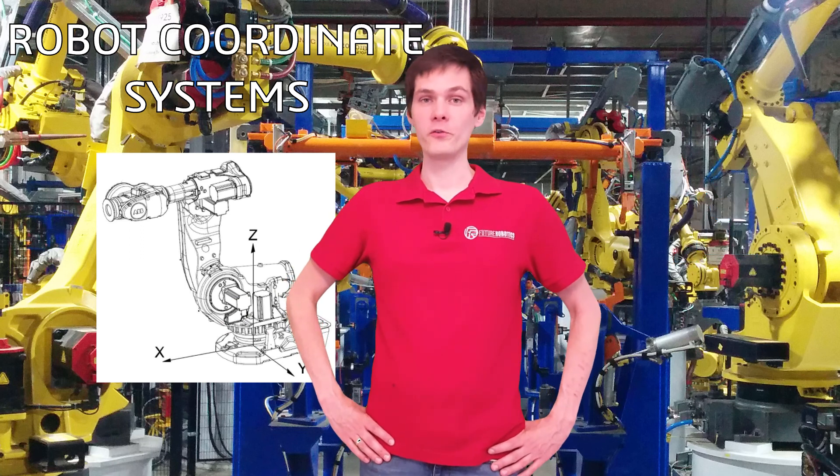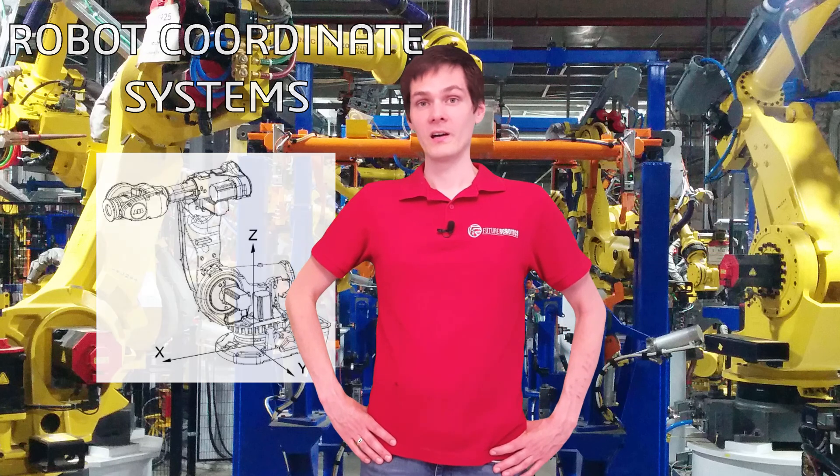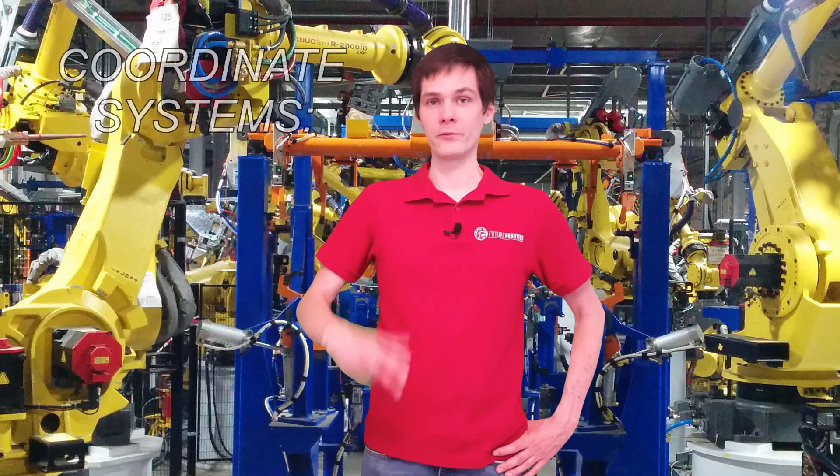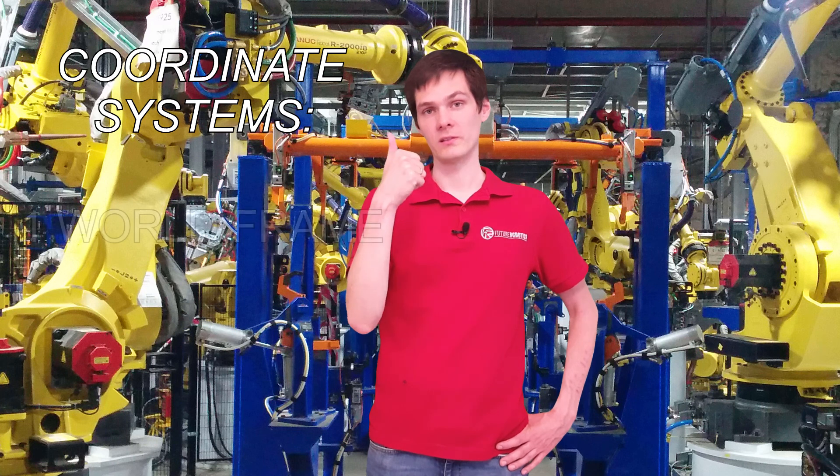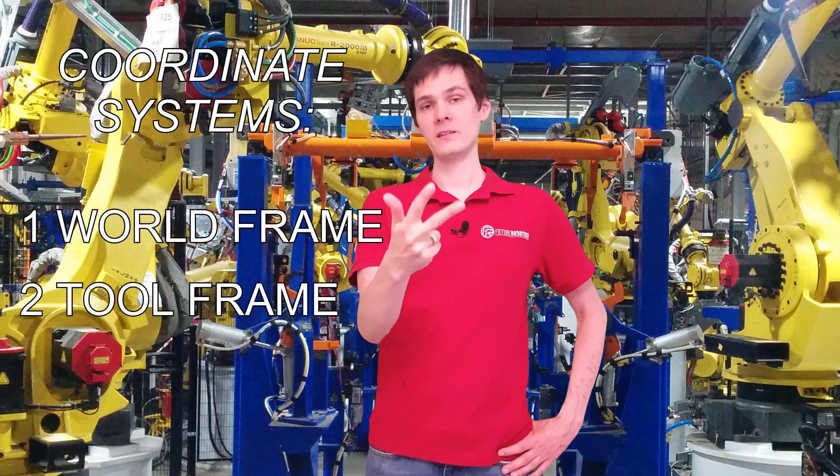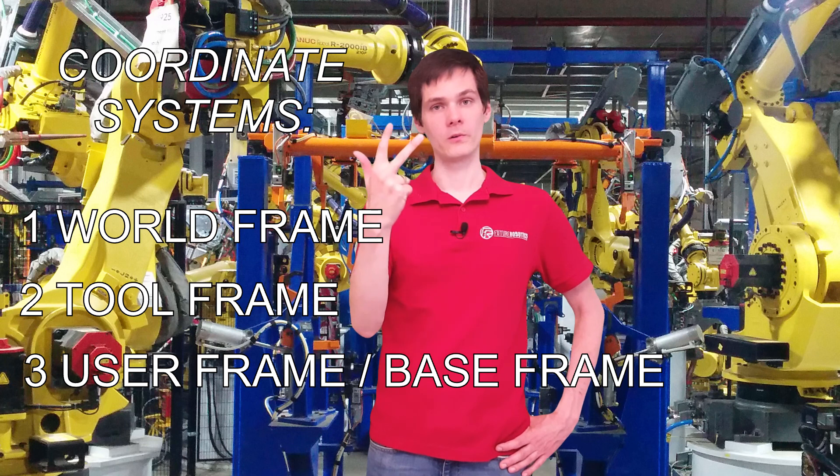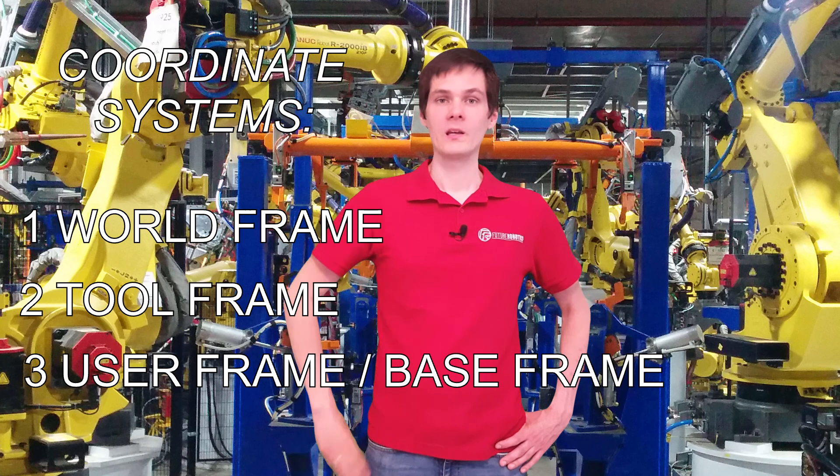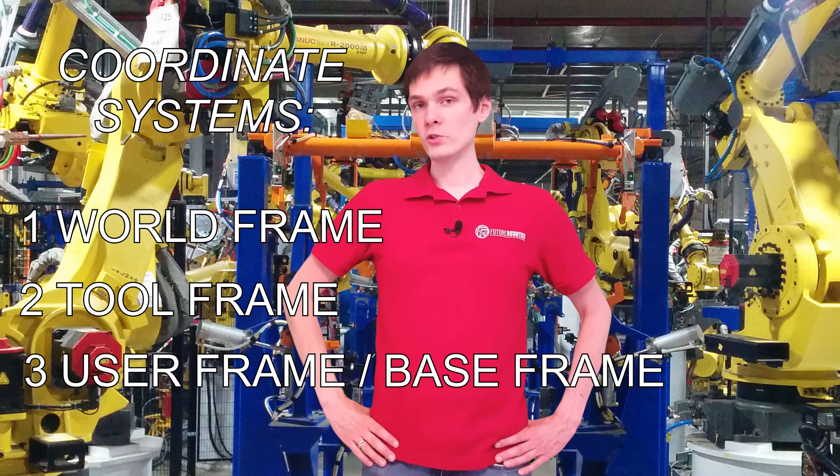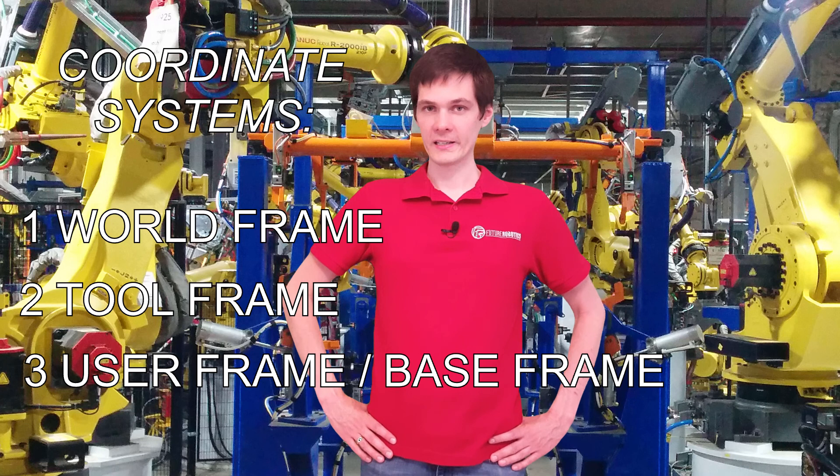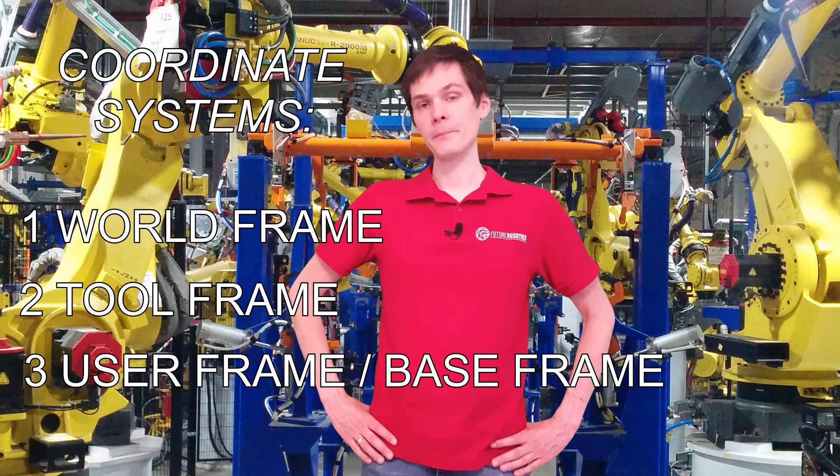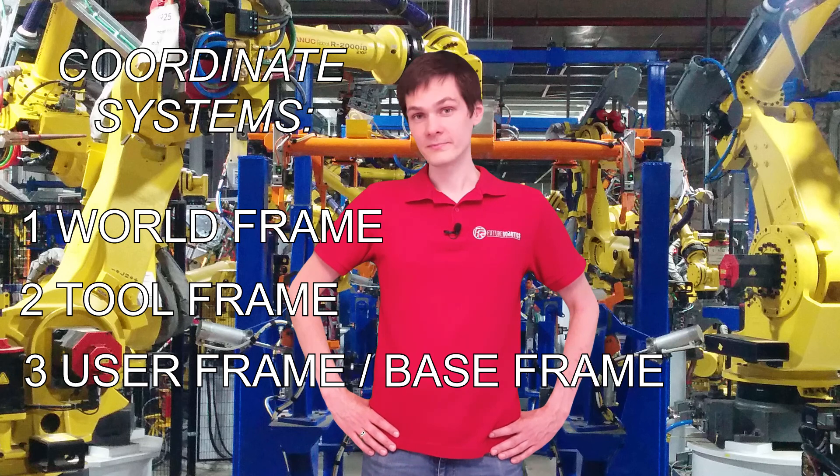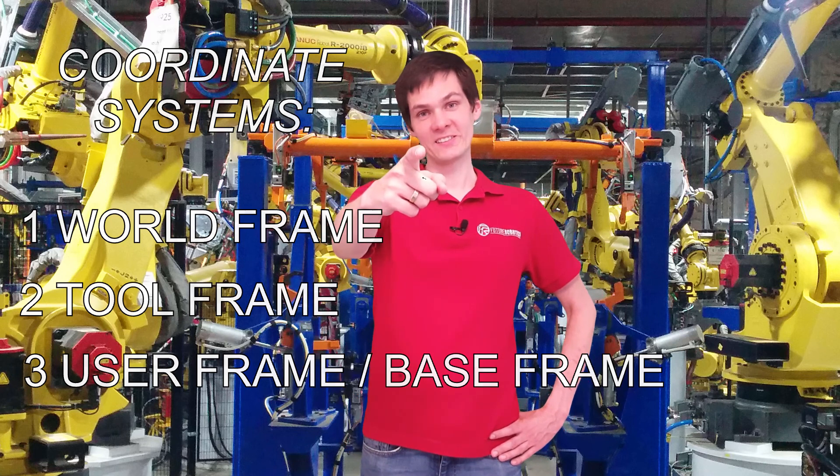But before we start there are a few things I wanted to tell you regarding the frames. So in most cases the robot will have three frames that you can jog in: the world frame, tool frame, and user frame or base frame, or other naming depending on the robot brand. They work however the same. So for you to understand how the frames are working I made a short presentation so you can figure stuff out. Let's get started.